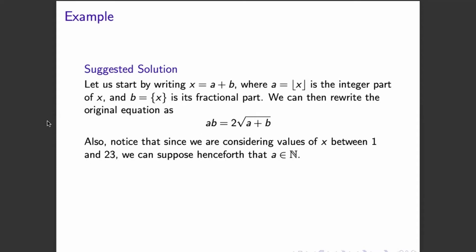as AB equals 2 times the square root of quantity A plus B. Notice that since we are considering values of X between 1 and 23, we can suppose from here on that A is a natural number or a positive integer.